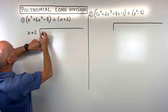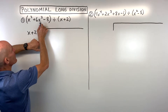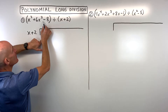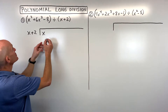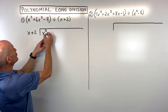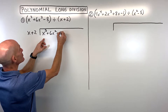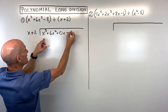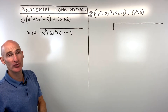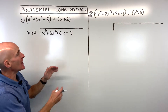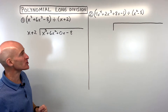What you want to pay attention to is if there are any missing terms. See how it jumps from x squared to the constant term? We're going to put a zero term in there as a placeholder. So we've got x cubed plus 6x squared plus 0x minus 8. If there were two missing terms, we'd put two placeholders. The reason we do this is it helps everything line up a little bit better.